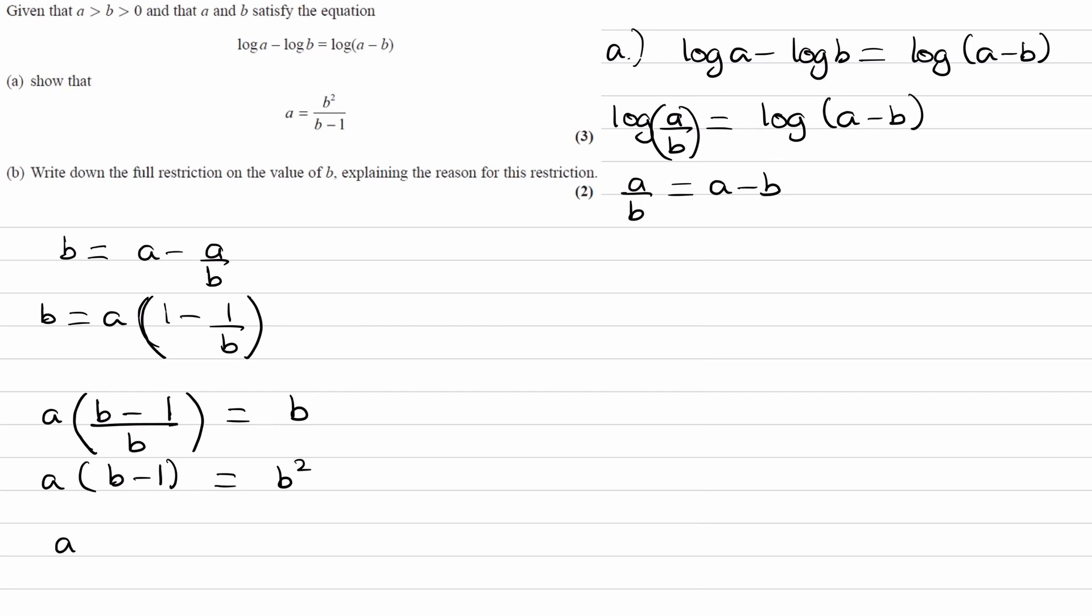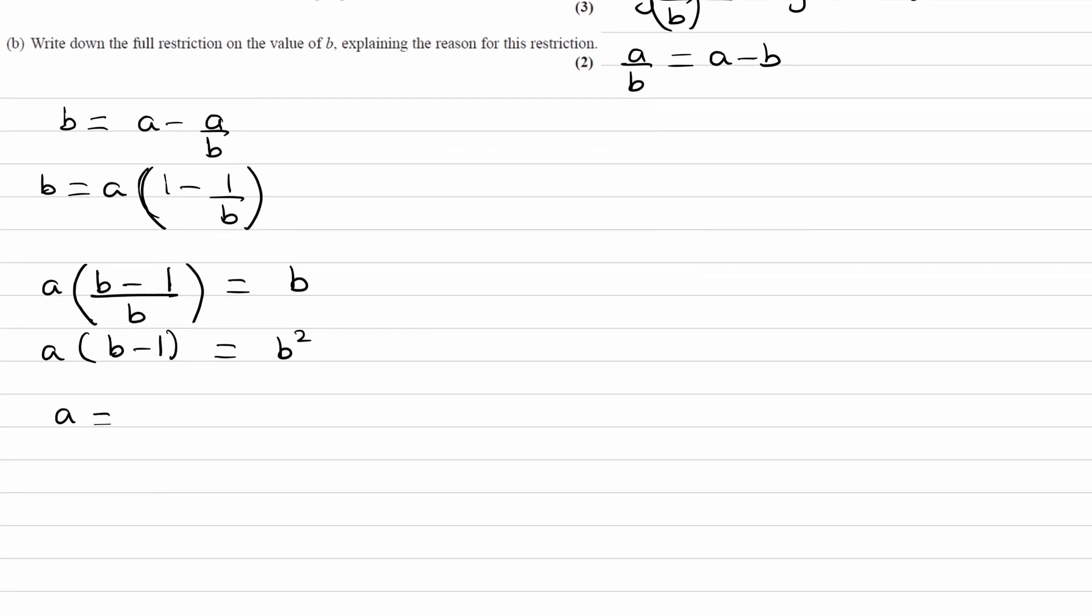And then finally, we can divide both sides by B minus 1. And that's our answer for part A.